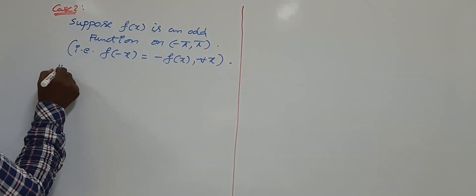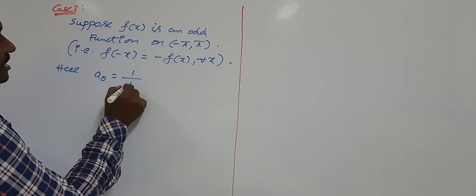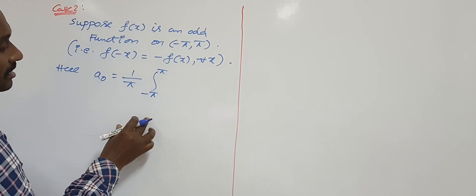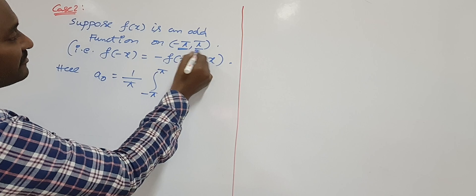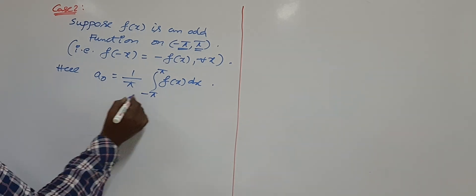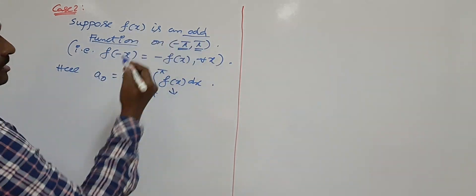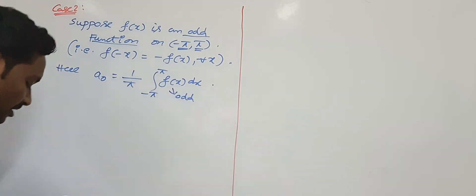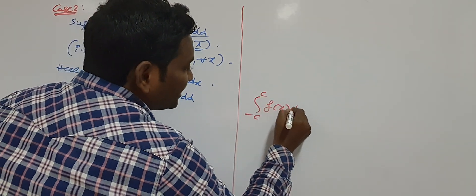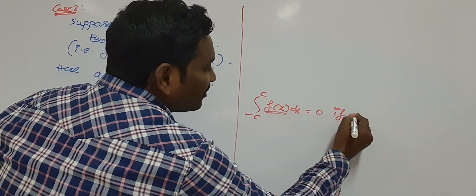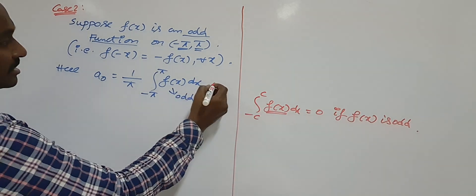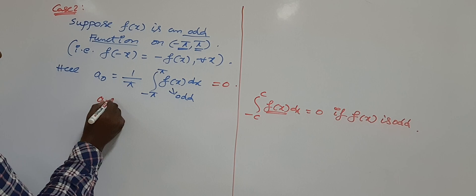Now write the formula for a₀. In general, a₀ = (1/π)·∫₋π^{+π} f(x) dx — always write the limits as the endpoints of the given interval. These are the general Euler's formulas for a₀, aₙ, and bₙ. Since f(x) is odd, and ∫₋c^{+c} f(x) dx = 0 when f(x) is odd, the entire integral becomes 0. So a₀ = 0.